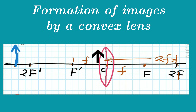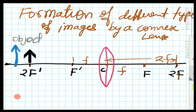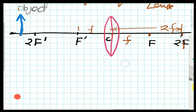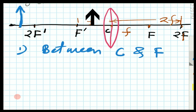An object is shown here. We will keep this object at various distances from the convex lens to get the image with respect to its position. I want to name those positions one by one, and thereafter we will draw the images for each position. For the first case, the object will be kept between the optical center and the principal focus, that means between F' and C.